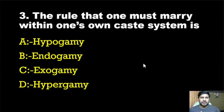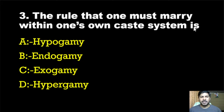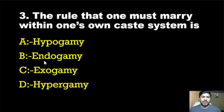Next question: The rule that one must marry within one's own caste system. Options are: hypogamy, endogamy, exogamy, hypergamy.